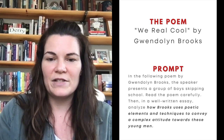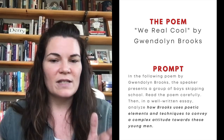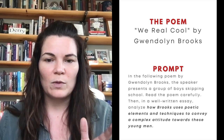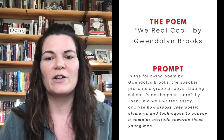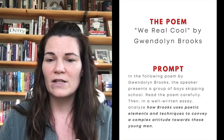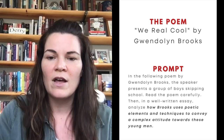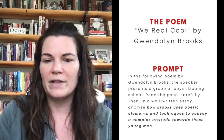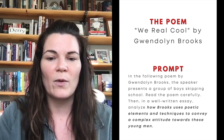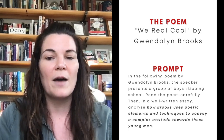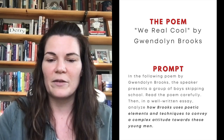The prompt that I have, as you can see here, I just made this up following the stable wording. It says: in the following poem by Gwendolyn Brooks, the speaker presents a group of boys skipping school. Read the poem carefully. Then, in a well-written essay, analyze how Brooks uses poetic elements and techniques to convey a complex attitude towards these young men.